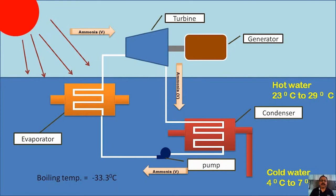The liquid ammonia passes through the evaporator. In the evaporator, the hot water from the top surface will pass through. All heat energy is given to the ammonia to convert it into vapor or gas. This gas is expanded on the turbine.